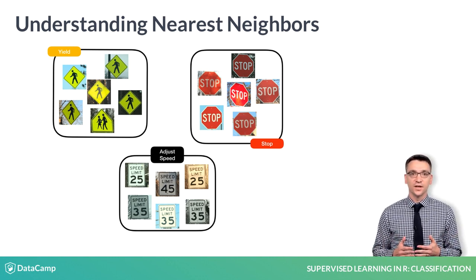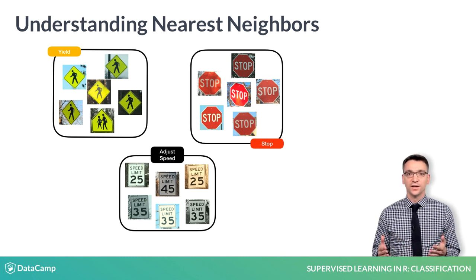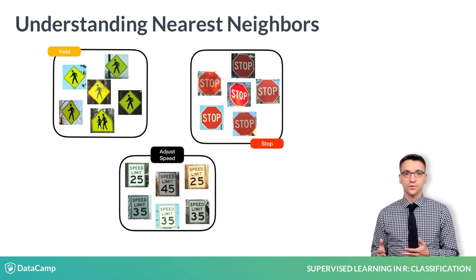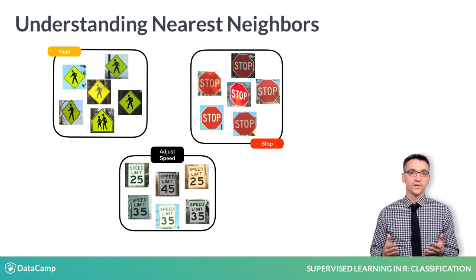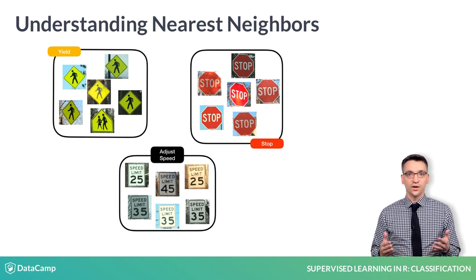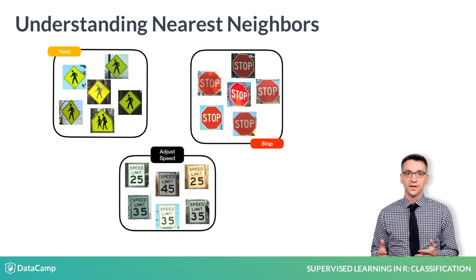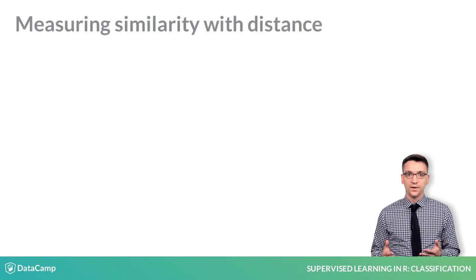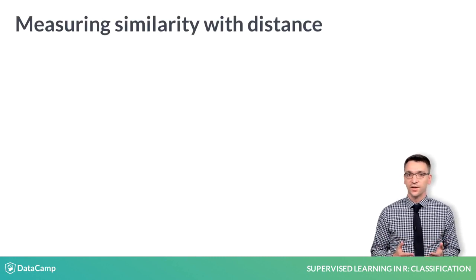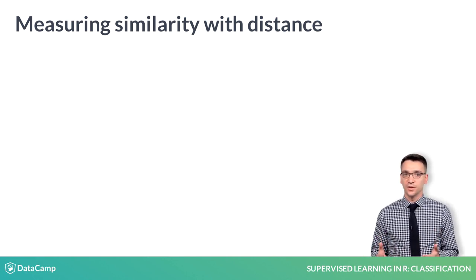A nearest neighbor classifier takes advantage of the fact that signs that look alike should be similar to, or nearby, other signs of the same type. For example, if the car observes a sign that seems similar to those in the group of stop signs, the car will probably need to stop. So how does the nearest neighbor learner decide whether two signs are similar? It does so by literally measuring the distance between them.